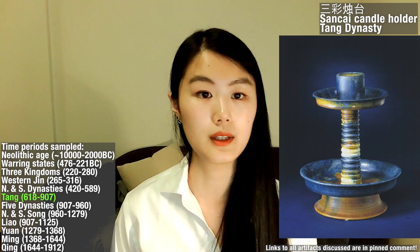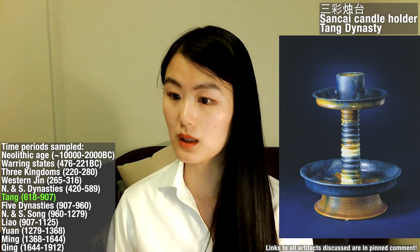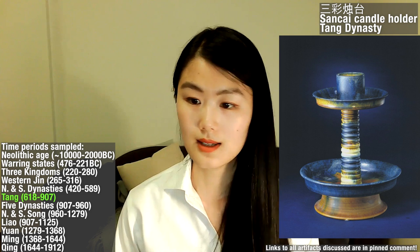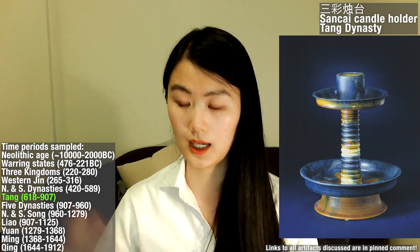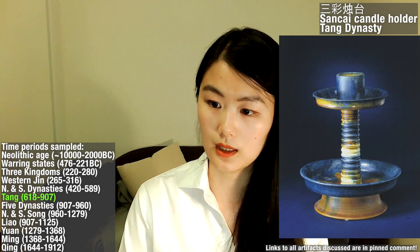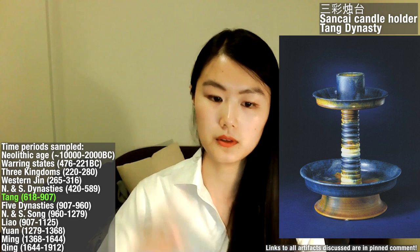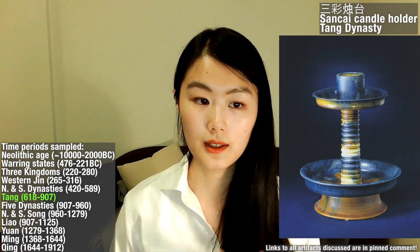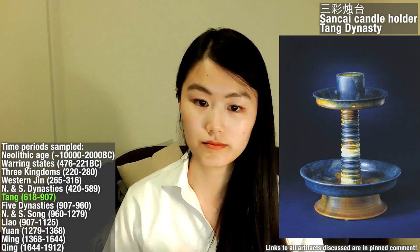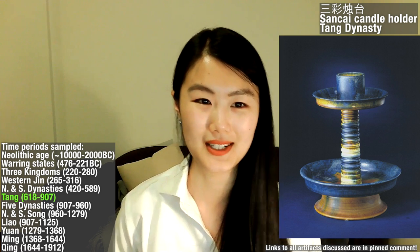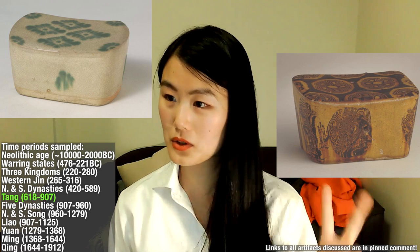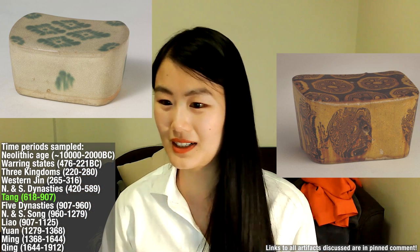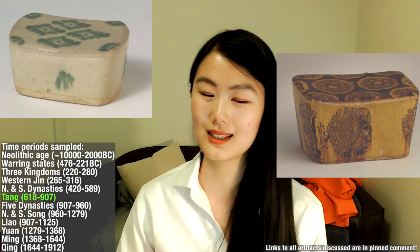Here is another example that caught my eye. The name of this artifact is Sancai Zhutai — a Sancai Candle Holder. But you see here, it actually has a fourth color, which is blue. So here we have blue, yellow, green, and creamy white. I thought this was a super well-made and aesthetically pleasing piece. The last two artifacts I want to show from Tang Dynasty are a new type of pottery piece I hadn't seen in the preceding dynasties — these are actually pillows, ceramic pillows.